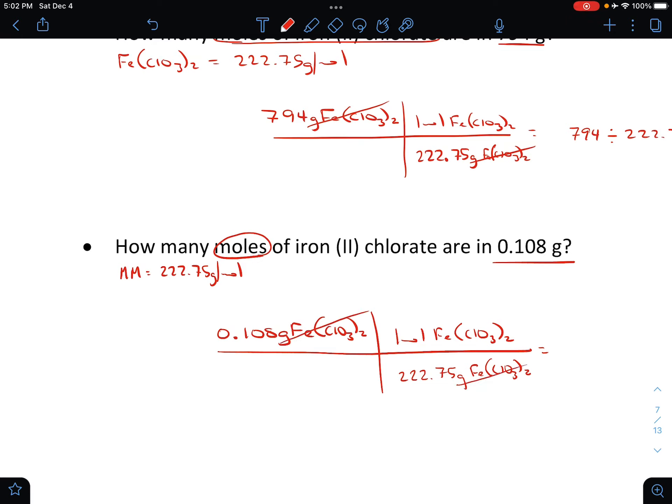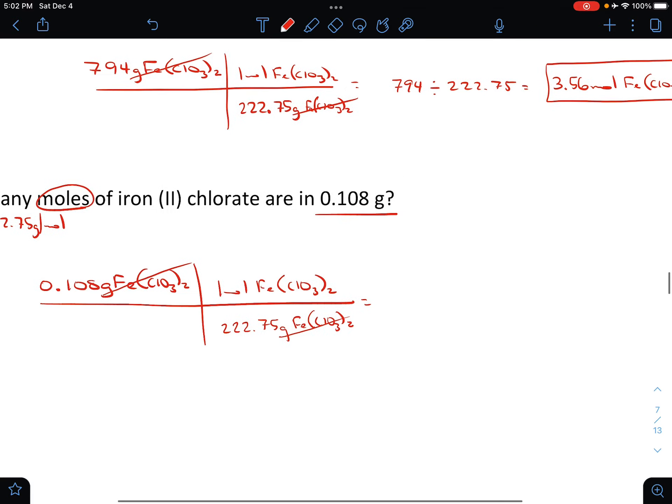So grams cancel, and now we're going to take 0.108 and divide by 222.75. This is going to be a smaller number, so we could even put that in scientific notation. Oh my, let's remember that. This should be a good review for us because our final is coming up. There we go with keeping the amount of sig figs that we'll need there.